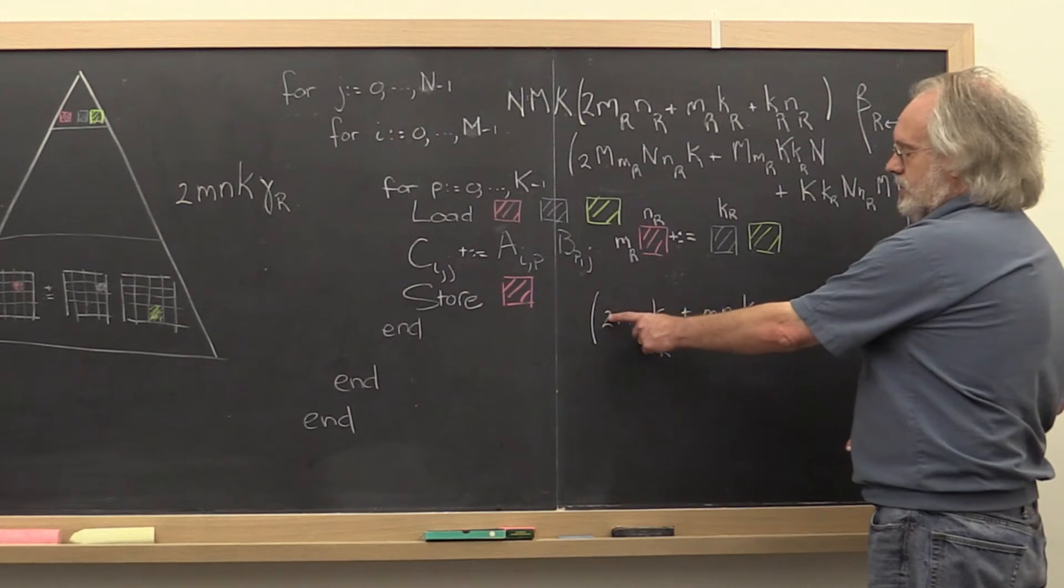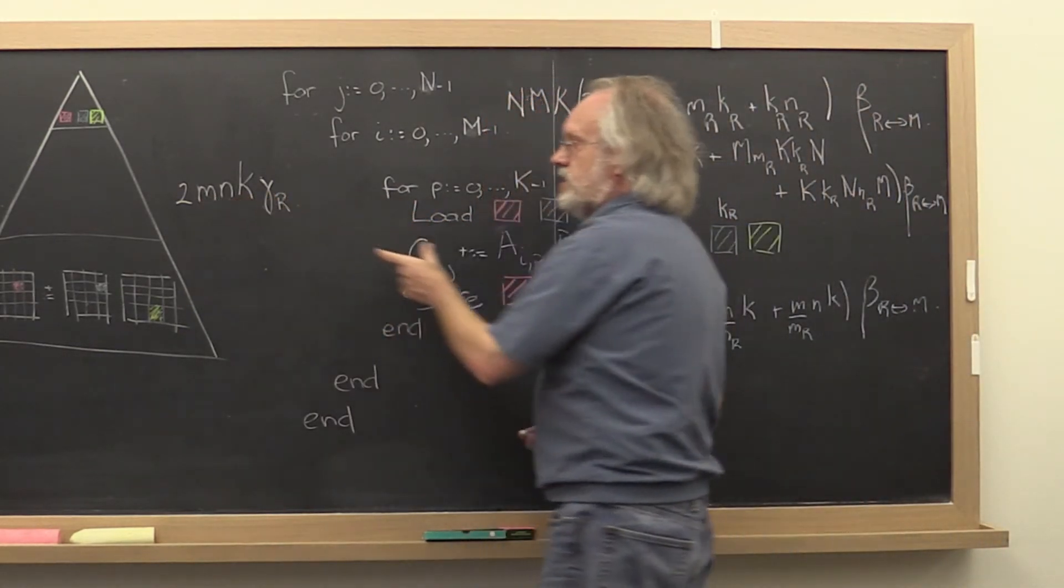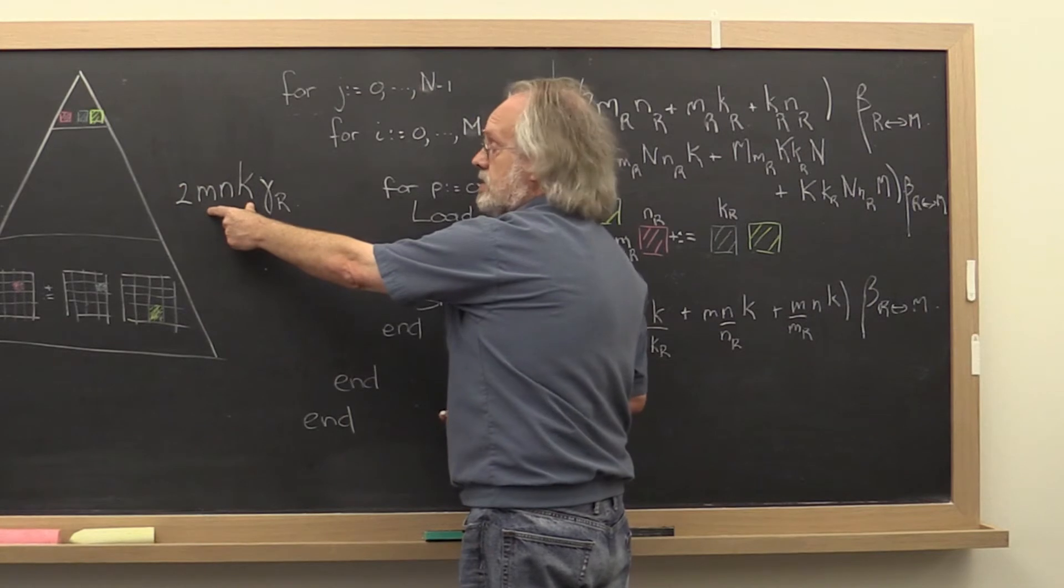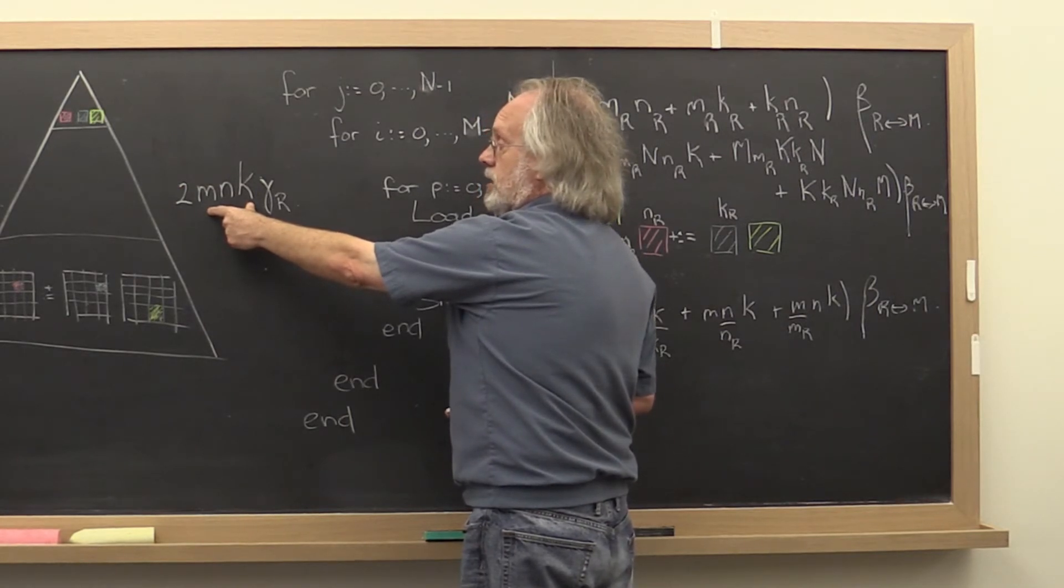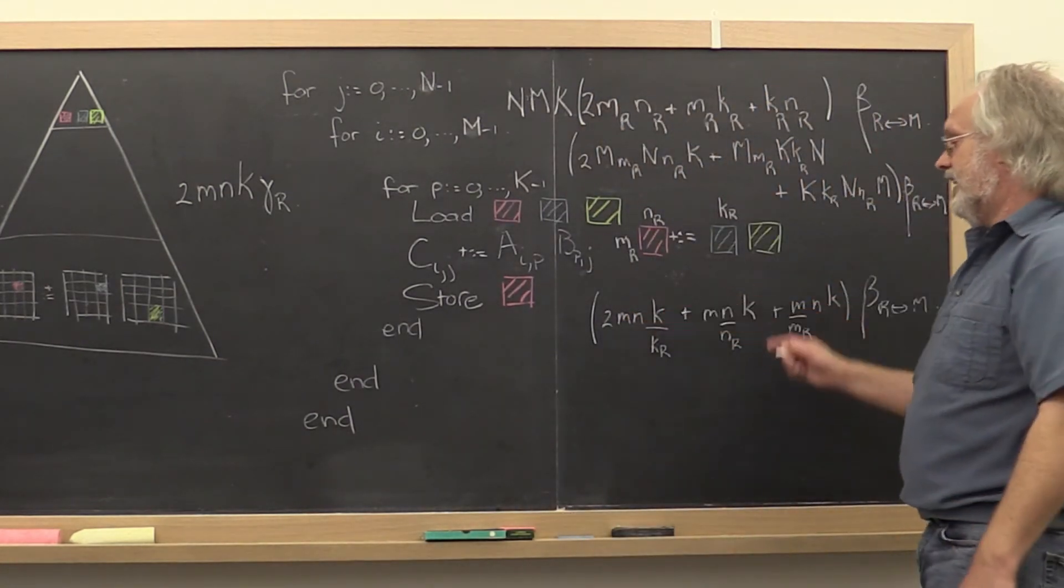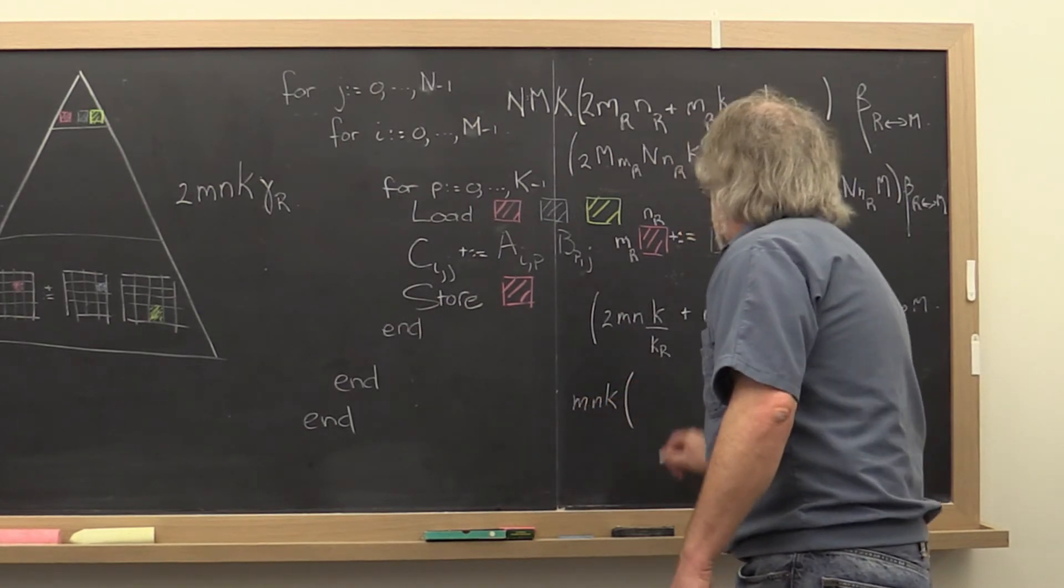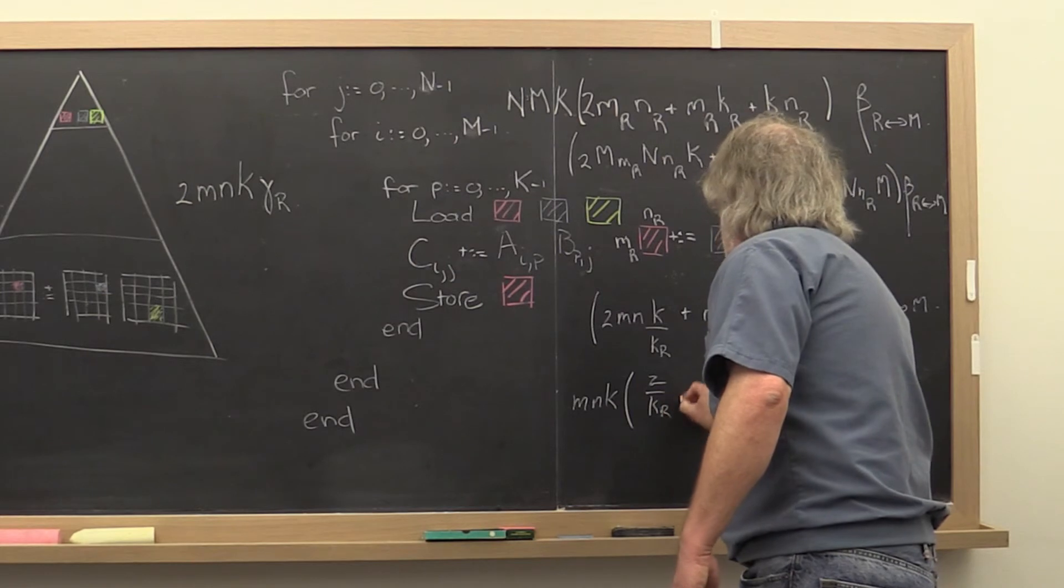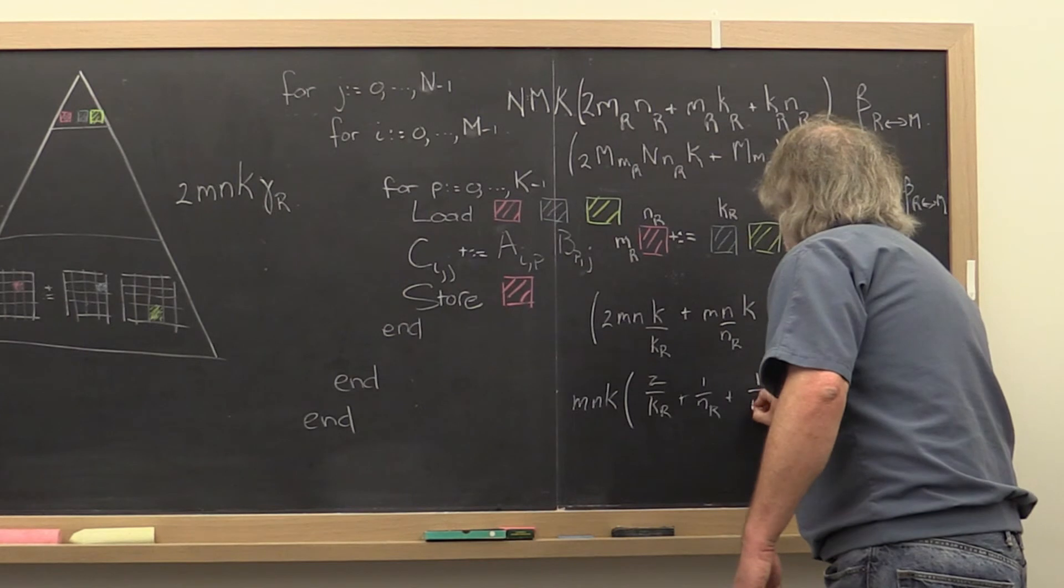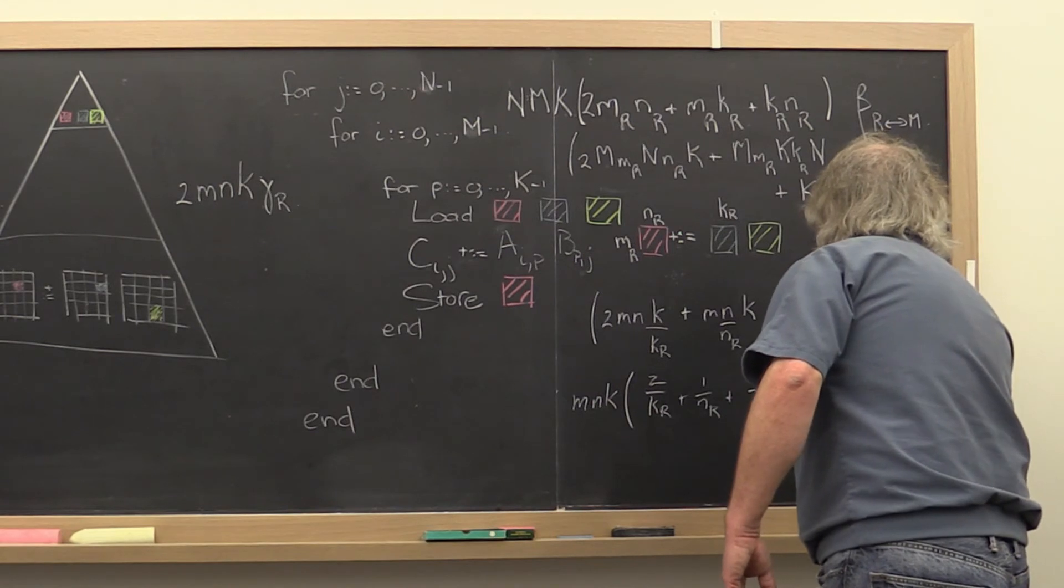And writing it this way is convenient because it'll make it easier for us to compare how much time we're spending in moving data around relative to the time we spent actually computing. And of course now we can pull the m, n, and k out. And we get m, n, k times 2 over kr plus 1 over nr plus 1 over mr times beta rm.